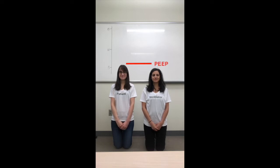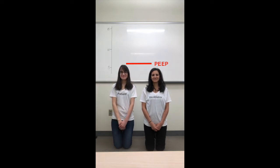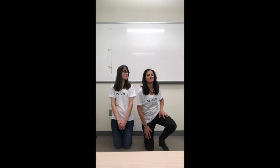In this demonstration, our heights represent pressure. Say I'm the ventilator — my height kneeling right now represents the ventilator pressure. My friend's height, while also kneeling, represents the patient's plateau pressure, which is also alveolar pressure. So at the end of exhalation, my pressure is PEEP, and her pressure should also be PEEP as long as there is no auto-PEEP and she has fully exhaled. Let's say we have a PEEP of five centimeters of water in this example.